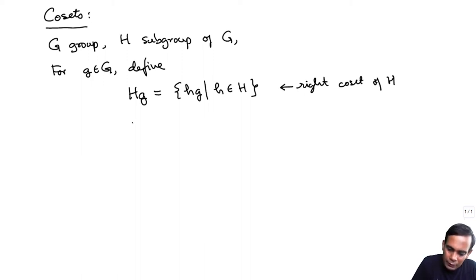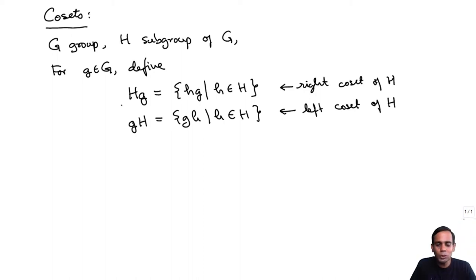And you can similarly define G times H to be gH where H belongs to H. This is called a left coset of H. So basically you have taken this subgroup H and then you have multiplied all its elements on the right by an element g of G.